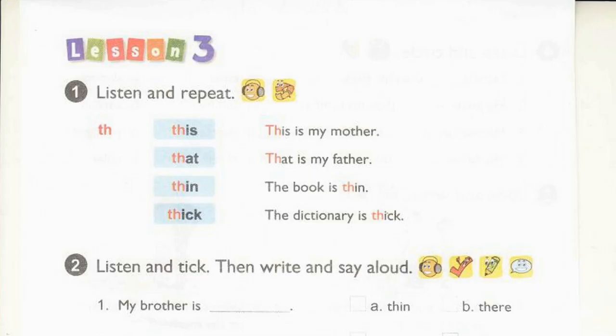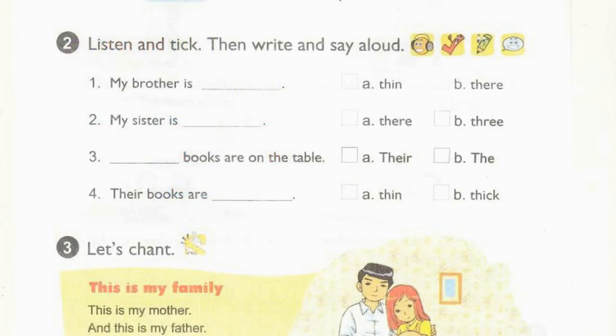Page 28, Lesson 3, Activity 1. Listen and repeat. The book is thin. Thick — the dictionary is thick. Activity 2. Listen and tick, then write and say aloud.